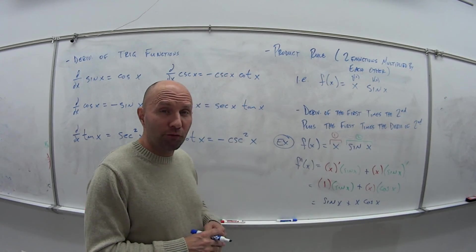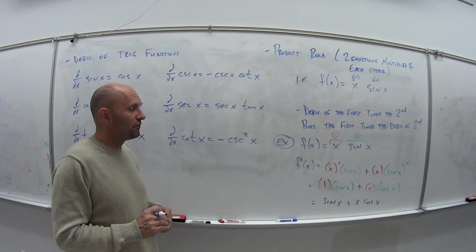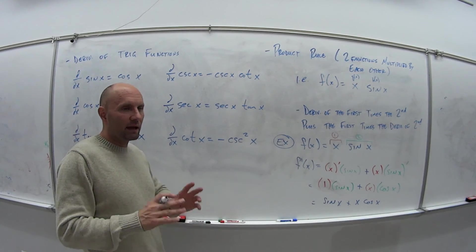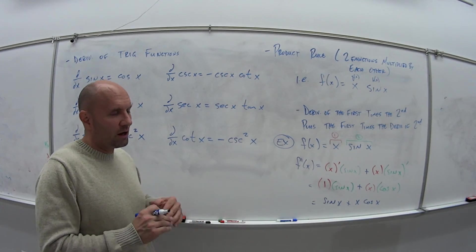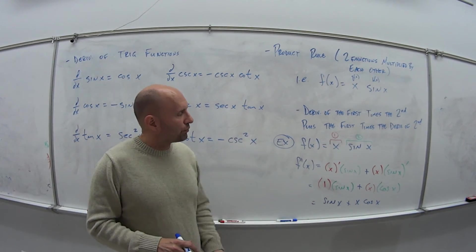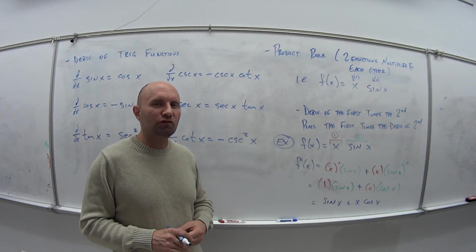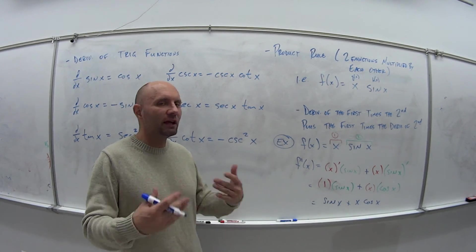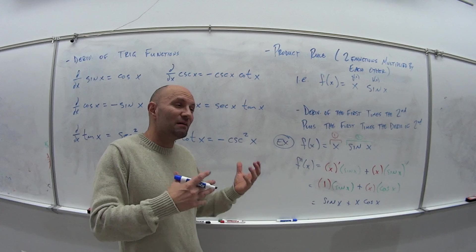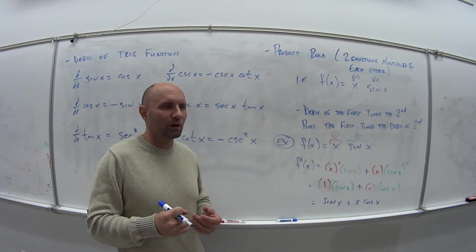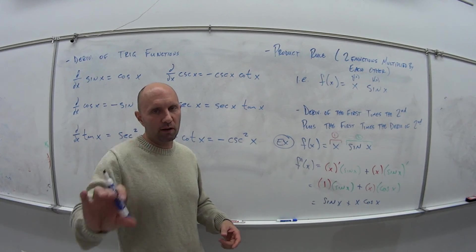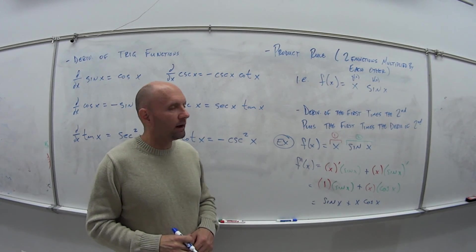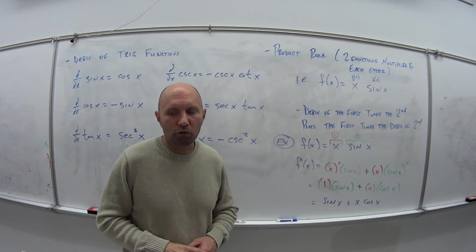All right, so that is the end of the first video for section 2.4. Come on back. In the second video, I'm just going to work examples from the book, a bunch of different problems, product rule, quotient rule, some of these trig functions. Just to give you guys more practice, more of a reference, so if you're doing homework and you get stuck, maybe you can go back to one of these examples where we're working and be like, oh, okay, I see how we get that. So come on back, and we'll work those examples. Great.